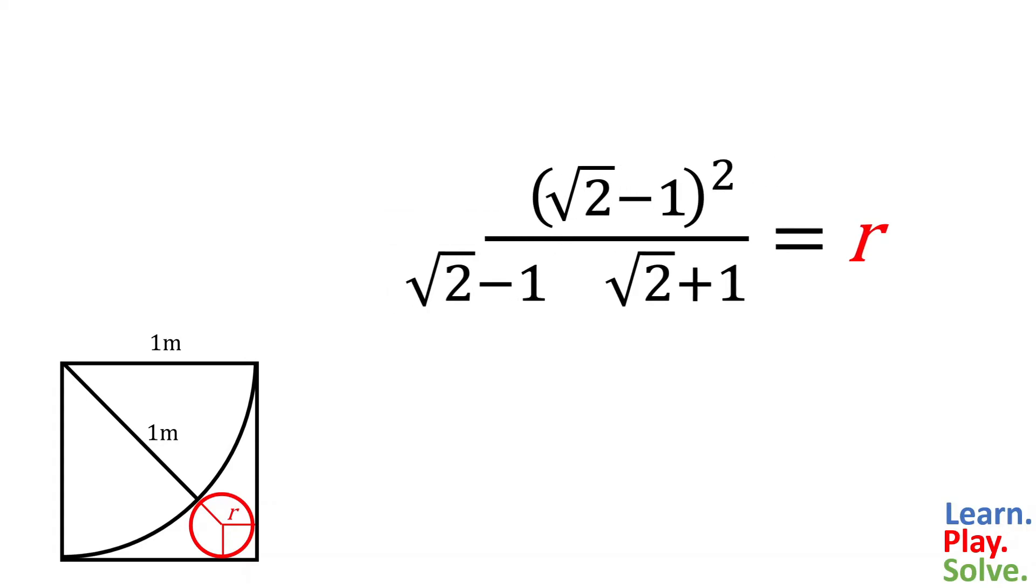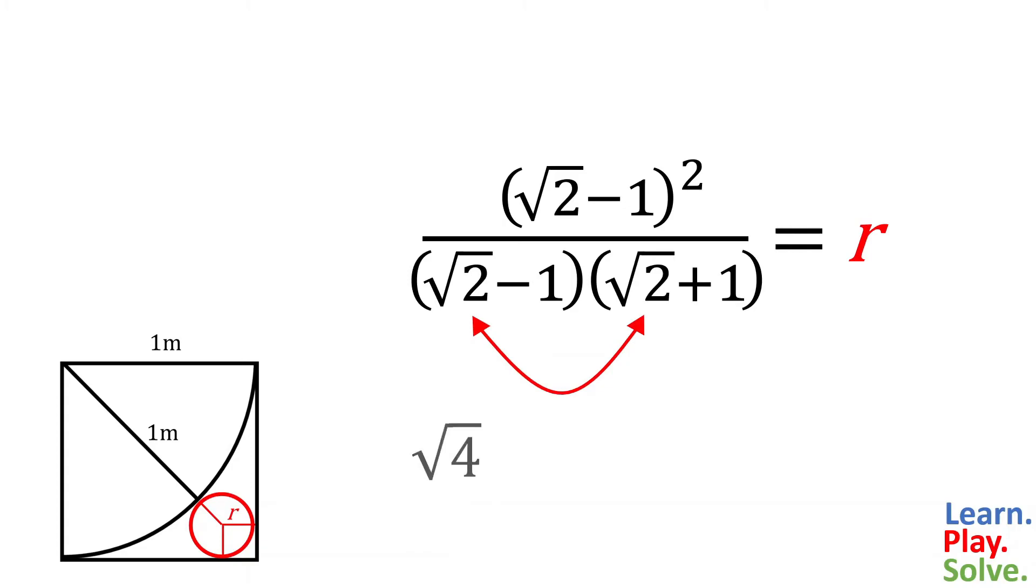On the bottom, we can multiply by foiling. The first terms, root 2 times root 2, equal root 4, which is just 2. Root 2 times 1 is root 2, and negative 1 times root 2 is negative root 2. These two terms are opposites, so they can cancel each other out.